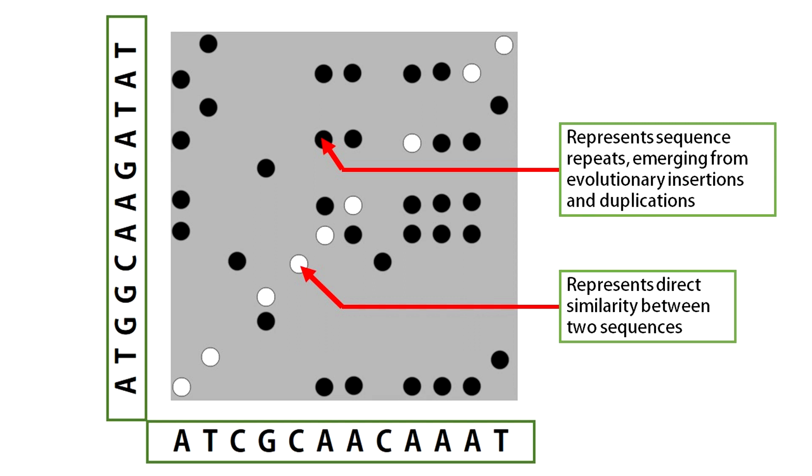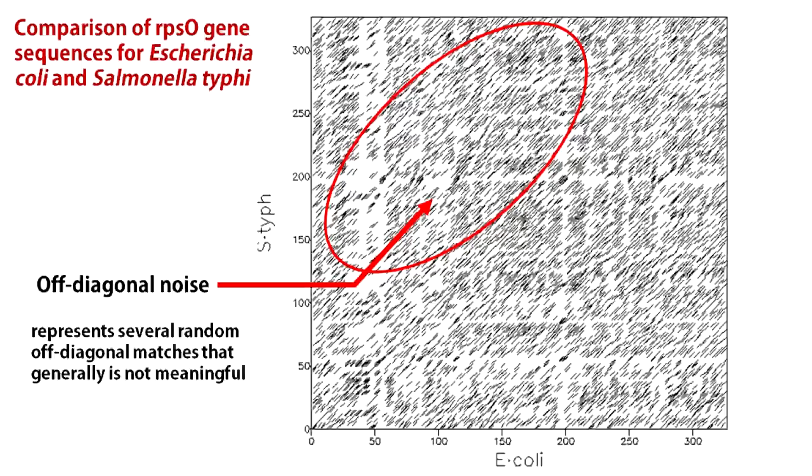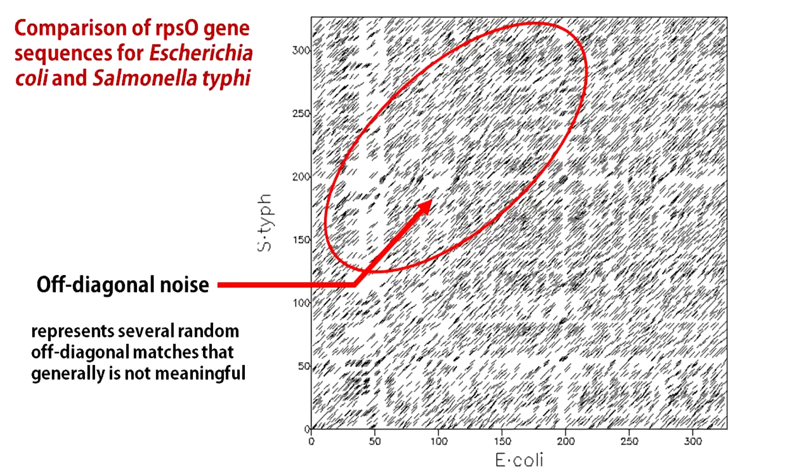When you are comparing two genes or two protein sequences, these off-diagonal dots often represent sequence repeats emerging from evolutionary insertions and duplications. Now, remember the expression that everything that shines is not gold. Similarly, every dot in the plot does not necessarily represent something biologically meaningful. So a major task of computational biologists is to minimize this off-diagonal noise so that random matches can be separated from the true sequence repeats.